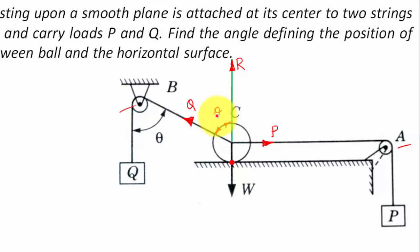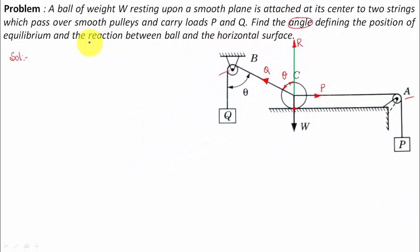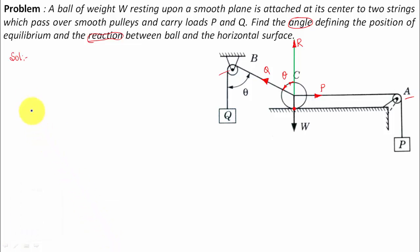Now we're going to go ahead and compute the values of theta for equilibrium position. So we have to find the angle defining the position of equilibrium and at the same time we have to find this reaction between the ball and the horizontal surface. I'll use a different color for this purpose. I use this blue color.